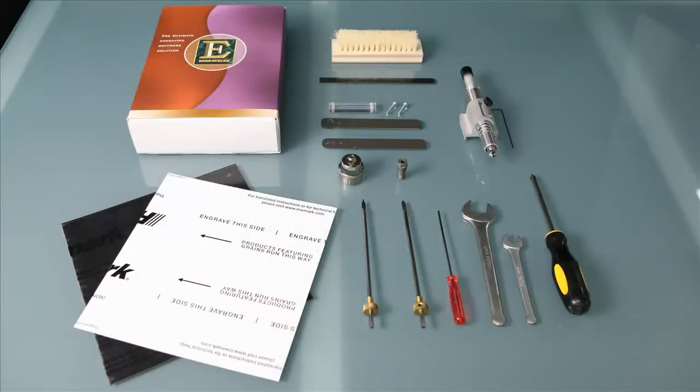To set up the ADA workflow, we'll need the following items which are part of our ADA bundle: our ADA substrate and tactile material, our EngraveLab software, a horsehair brush for cleaning off the engraved material, a ruler, and our spindle cover offset hardware.